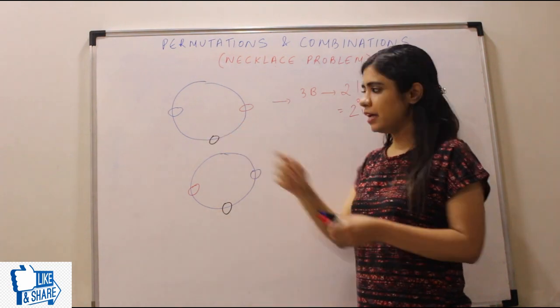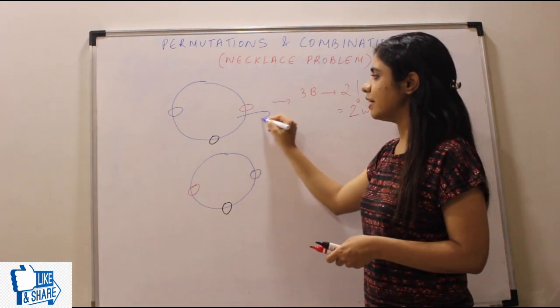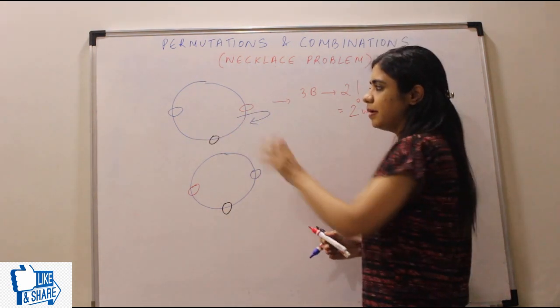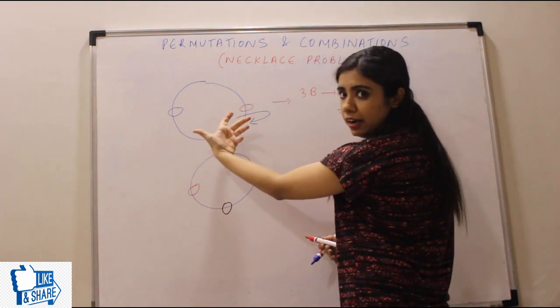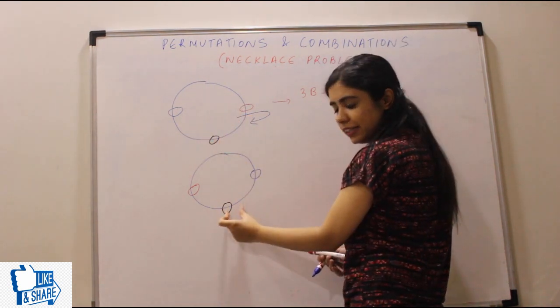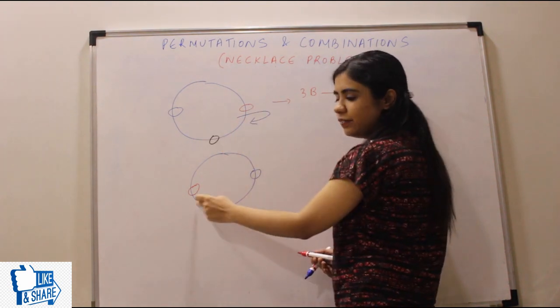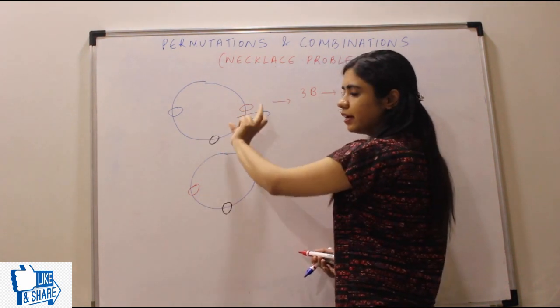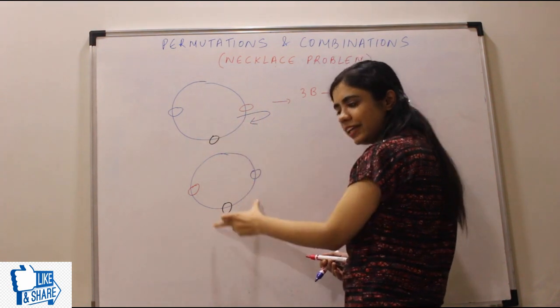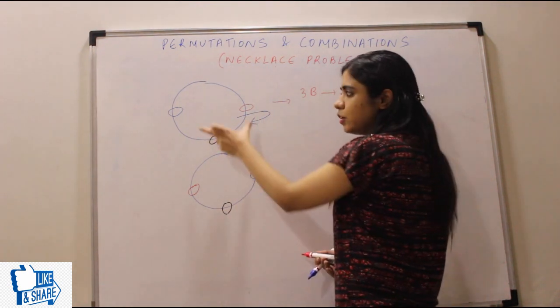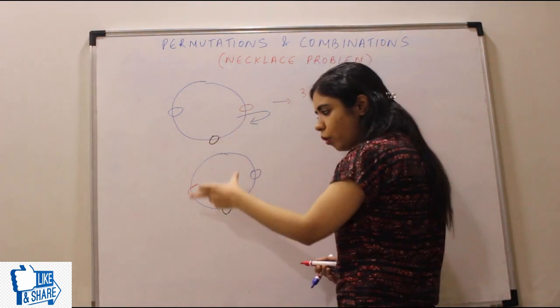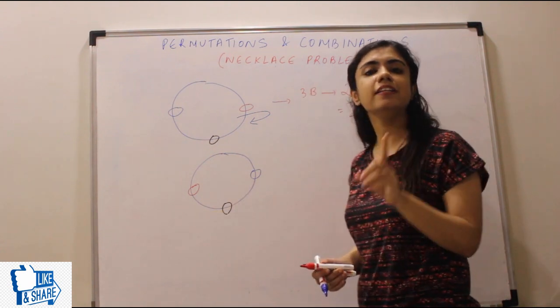Now understand, this is my necklace. If I reverse it by 180 degrees, agar mein isko ulta kar diya, then black will remain at the same position. Blue will come here and red will come here. Isko ulta kar diya, it will look like this only. So if you wear it this way or you wear it this way, it's one and the same thing.